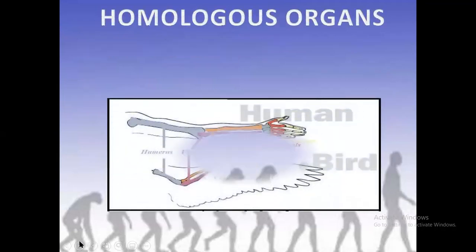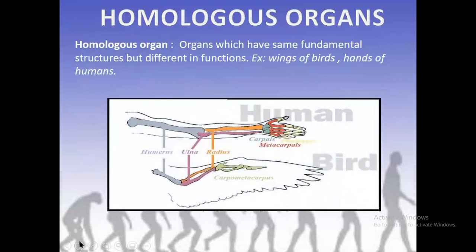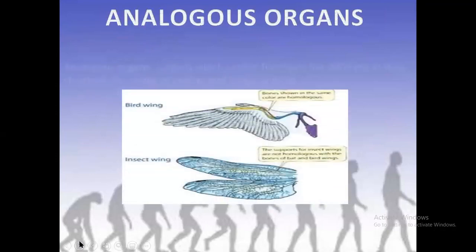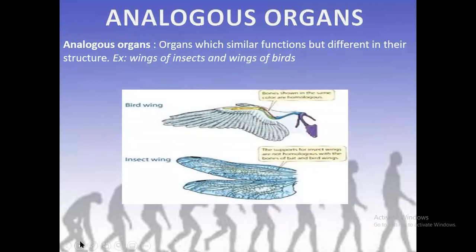Homologous organs are organs which have the same fundamental structure but different functions. For example, wings of birds and hands of humans — same structure, different function. Analogous organs are organs which have similar functions but different structures — same function, different structure. For example, wings of insects and wings of birds.